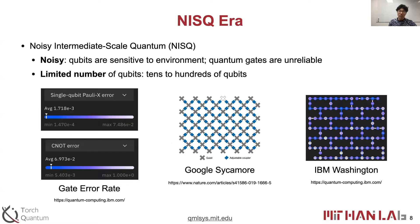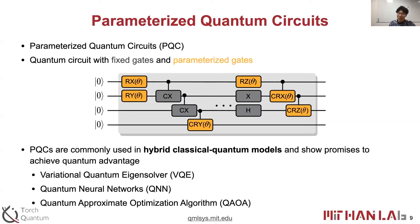As for background, we know that we are in the noisy intermediate scale quantum, or NISQ, era. Noisy here means the qubits are sensitive to perturbations from the environment and the quantum gate fidelity is low. For IBM Q devices, the errors are around 10 to the power of minus 2 to minus 3. Intermediate scale means we have a limited number of qubits in the scale of tens or hundreds. Recently, parameterized quantum circuits are a research focus for applications on NISQ devices.